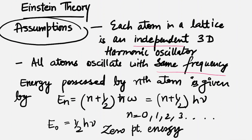Since the atoms are acting as harmonic oscillators, we know the energy possessed by a harmonic oscillator is a multiple of hμ. We can find the zero point energy by putting n equal to zero, giving E₀ equal to half hμ. This is the basics of a harmonic oscillator one should know.